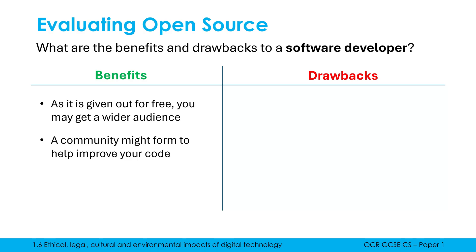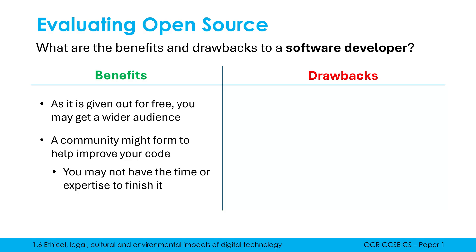For smaller open source projects, a big draw for developers is that a community may form to help improve your code. You might develop part of your idea, upload it online as open source, and hope that like-minded people get involved — maybe as a hobby — to give improvements and adapt your code. That might be because you haven't got the time or expertise to finish the project, and you're relying on others to support it. Lots of open source projects don't get looked at by anybody else, but there are examples where a nice community forms to contribute, similar to how Wikipedia works with many contributors.